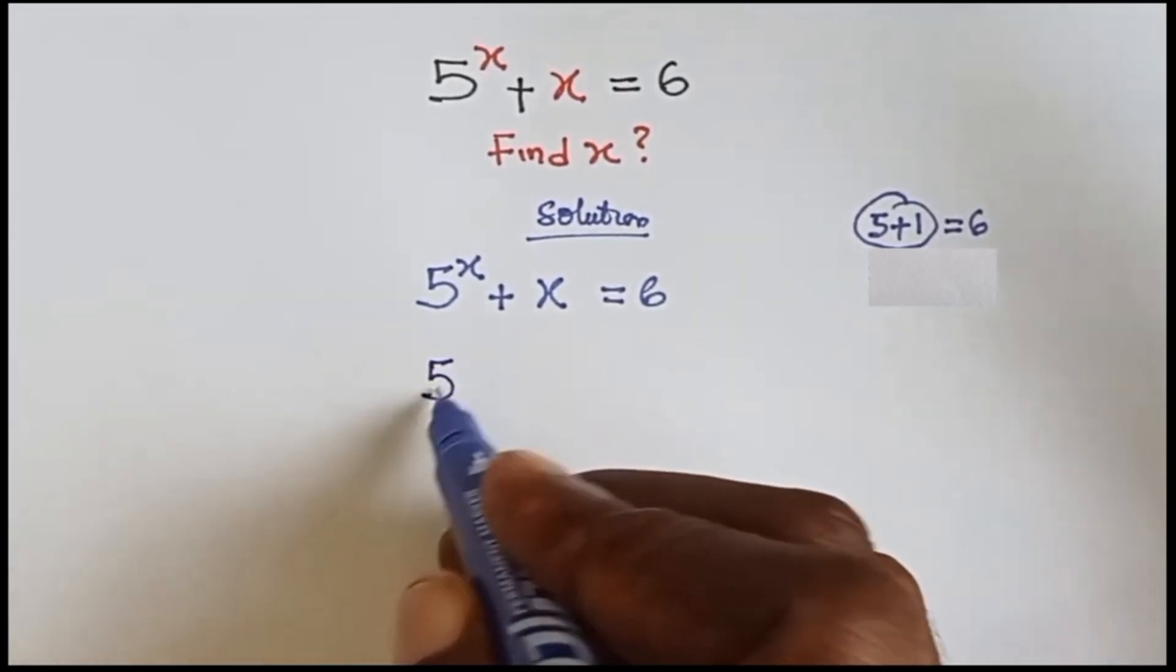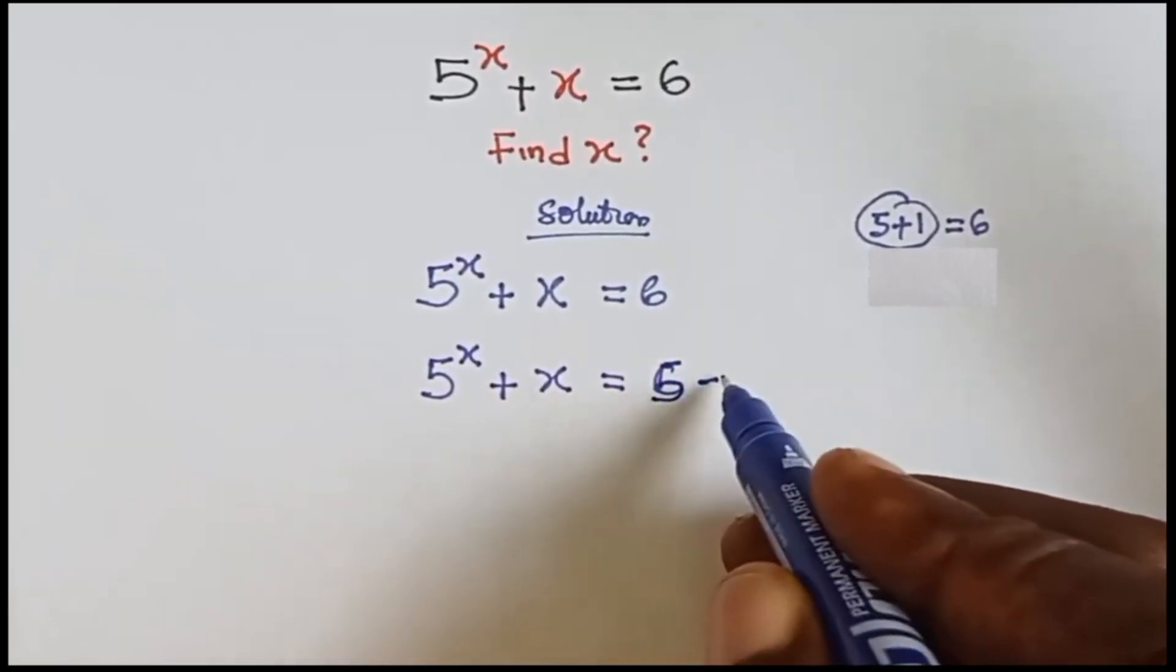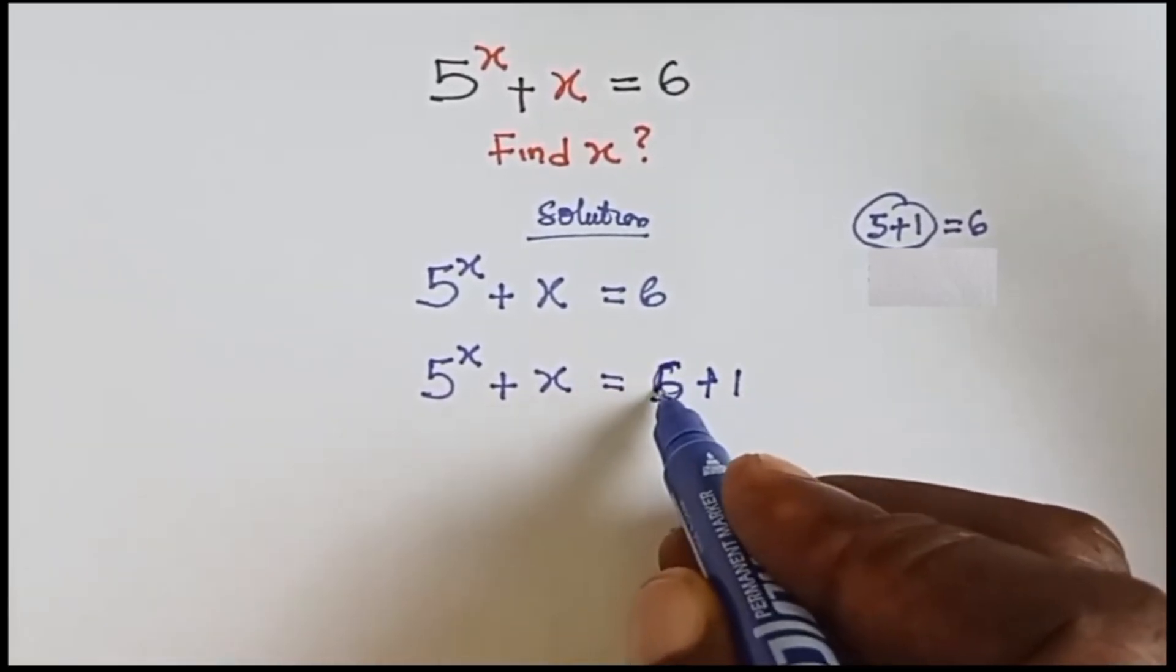So we're going to write 5 raised to the power x plus x equals 5 plus 1, which will give us 6.